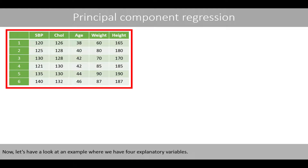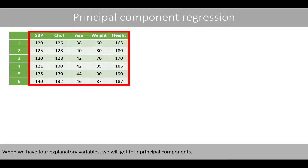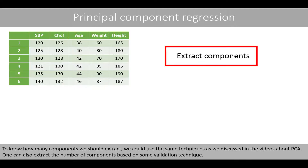Now let's look at an example with four explanatory variables. In addition to cholesterol level and age, we now also have measurements of body weight in kilos and body height in centimeters for the six individuals. With four explanatory variables, we get four principal components. To decide how many components to extract, we can use the same techniques discussed in the PCA lectures, or a validation technique.